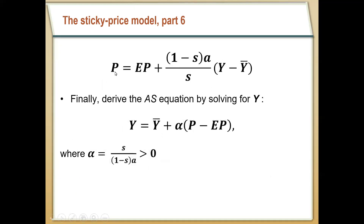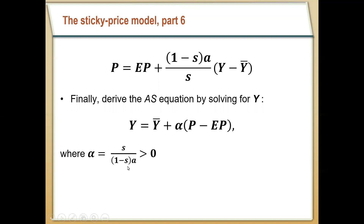We can take this expression for price and derive the aggregate supply equation. Solving for output Y gives us exactly the same aggregate supply equation where Y is related to potential output and changes in price from expectation. Instead of writing out all the terms with S, 1 minus S, and alpha, we simply say that total output is related to deviations of the actual price level from expected prices by the coefficient alpha — which incorporates the fraction of firms with sticky prices S and flexible prices 1 minus S. This shows how we get from the price expression to an upward sloping aggregate supply curve: higher prices lead to higher output in this model.